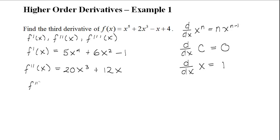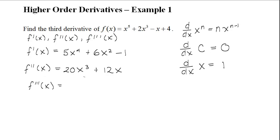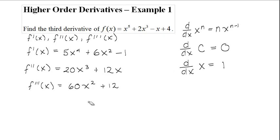Now we can find our third derivative, which is our final answer. We take the derivative of our second derivative. For the first term, 20 times 3 gives 60, and x to the power of 3 minus 1 gives x squared, so we get 60x squared. For the last term, we have 12x, and since the derivative of just x is 1, multiplying by 12 gives plus 12. So that is how you take a higher order derivative, and this is the third derivative of f of x.